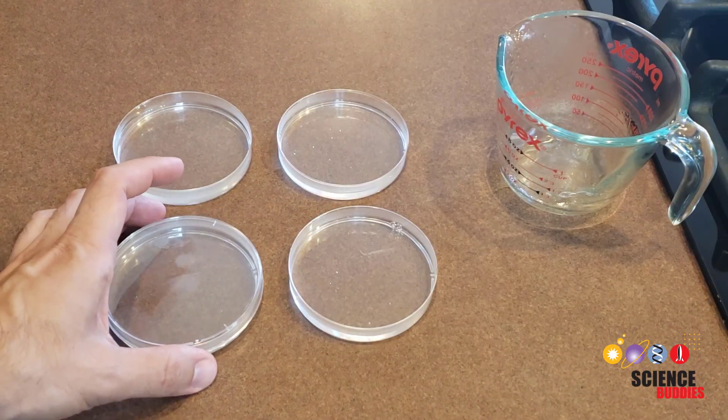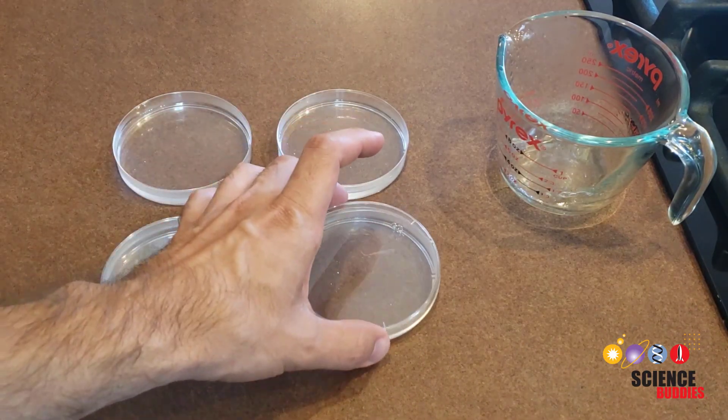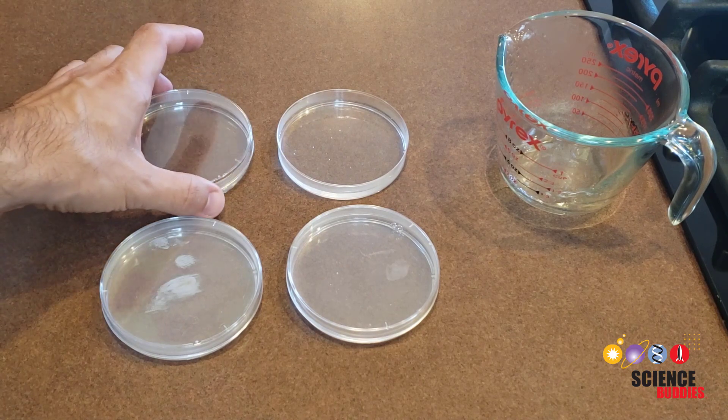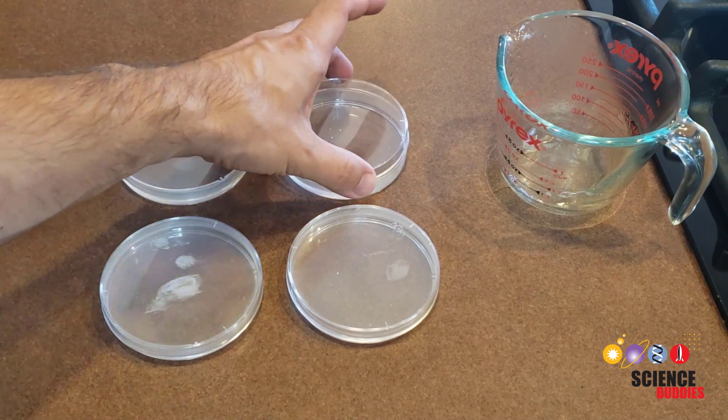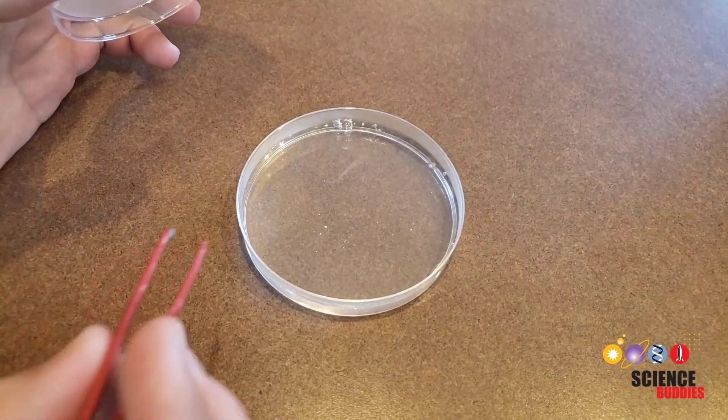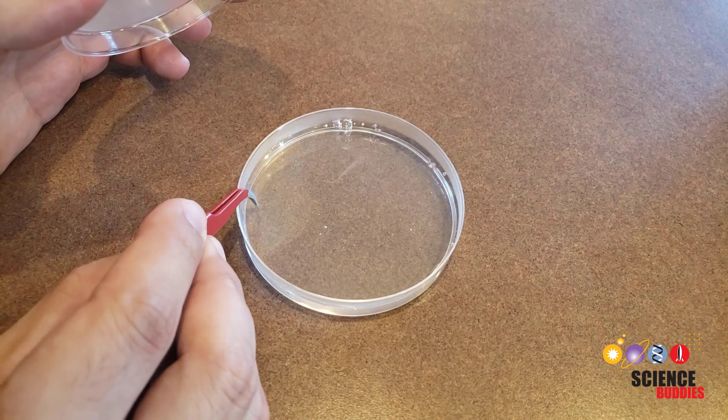When you're done, place the lids back on the petri dishes and wait for up to 30 minutes for the agar to solidify. You can test whether it has started to solidify by gently poking it with tweezers.